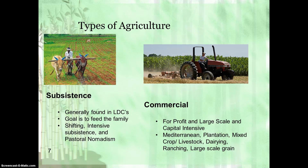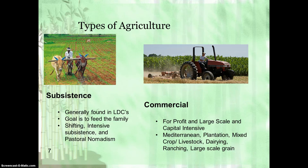On the right we see commercial agriculture, which is kind of the opposite of subsistence. It's found in MDCs, it's generally for profit, it's large scale, and it's capital intensive. As we can see in the picture, it's a guy on a big tractor, so there's an obvious technological difference between these two pictures. The subsists of commercial agriculture include Mediterranean and plantation — those two are found in LDCs but the way they're done, they're commercial based. And then there's mixed crops, livestock, dairy, ranching, and large scale grain.